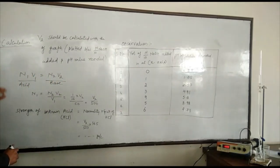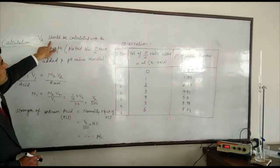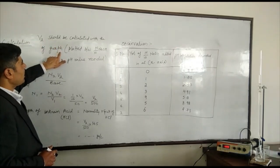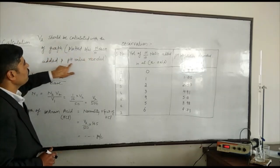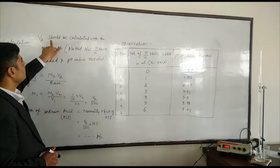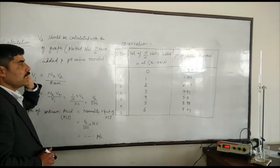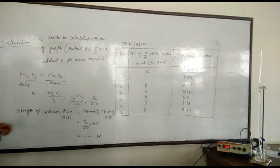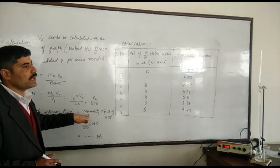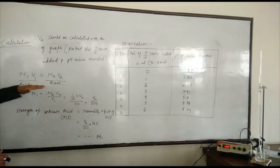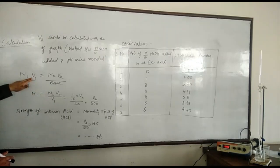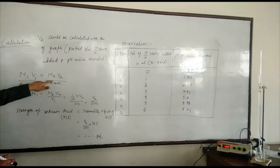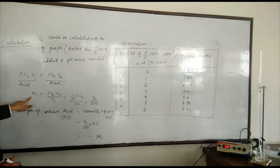Now we move to the calculation part. V₂ is the volume we calculate from the graph, plotted between the N/10 NaOH on the x-axis and the pH value recorded on the y-axis. We read V₂ from the graph at a pH value of 7. For the strength, the formula is normality multiplied by equivalent weight. First we determine normality using the normality equation: N₁V₁ = N₂V₂, where N₁V₁ is for acid and N₂V₂ is for base. The acid normality is unknown and its volume is 50 mL. For the base, normality is 1/10 and the volume V₂ is calculated from the graph. So the normality of acid = V₂/500.